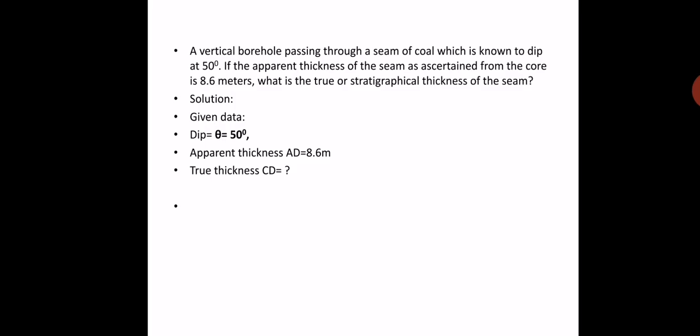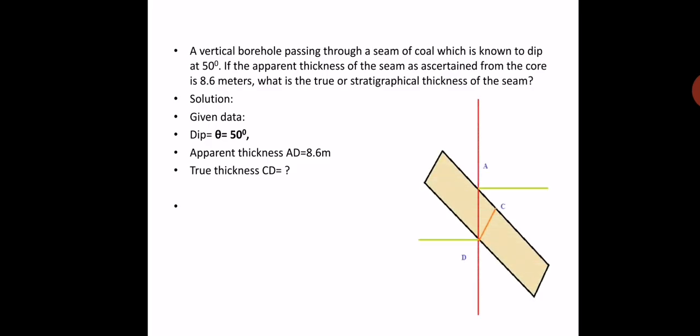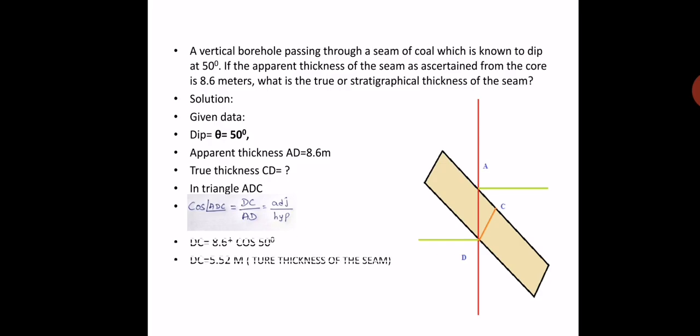Solution: the given data is dip of the seam theta = 50 degrees, apparent thickness AD = 8.6 meters, and we need to find CD, the true thickness. In triangle ADC we apply basic trigonometry. Cosine of angle ADC equals cosine of theta, which equals adjacent over hypotenuse, that is DC over AD. Therefore DC = AD × cos(theta) = 8.6 × cos(50°), giving the true thickness as 5.52 meters.